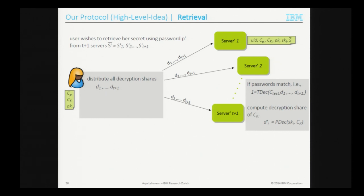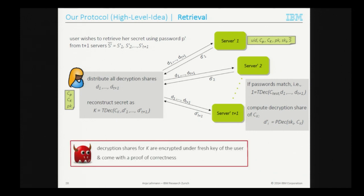To retrieve the strong secret key, the user distributes all decryption shares of CP_test to all servers. The servers verify that the password matched and, if so, compute a decryption share of CK using their secret key share and send it back. Finally, the user reconstructs the strong key K by applying the threshold decryption algorithm. Decryption shares must be communicated securely — the user generates a fresh encryption key at the start of the protocol, and each partial decryption comes with a proof of correctness so the user cannot be set up with the wrong key.